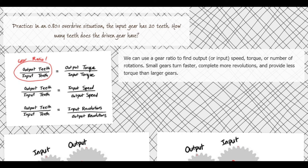All three things — gear ratio, torque, speed, and revolutions — relate to output teeth over input teeth. Torque is like gear ratio: output over input. But speed and revolutions are inversely proportional: it's input over output. This is on your formula sheet, so make sure you don't miss that.